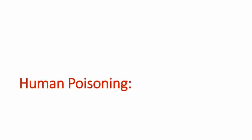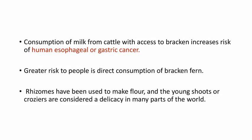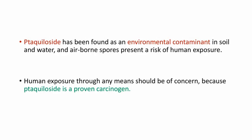Let's see human poisoning with Bracken Fern. Consumption of milk from cattle with access to Bracken increases the risk of human esophageal or gastric cancer. Greater risk to people is direct consumption of Bracken Fern, because the rhizomes have been used to make flour and the young shoots or croziers are considered a delicacy in many parts of the world. Ptaquiloside has been found as an environmental contaminant in soil and water, and airborne spores present a risk of human exposure. Human exposure through any means should be of concern because ptaquiloside is a proven carcinogen.